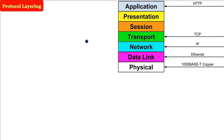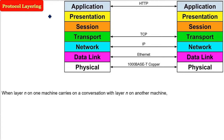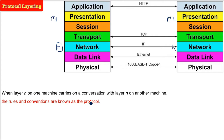In protocol layering, different layers are based on certain concepts and the services they offer. For example, in a two-machine setup, the nth layer of machine M1 talks to the nth layer of machine M2 - they are communicating via a protocol with agreed rules and conventions defining header size, packet size, and so on.